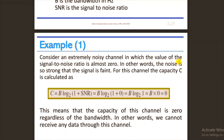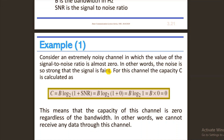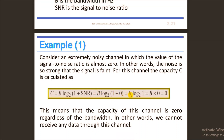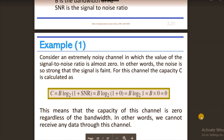Consider an extremely noisy channel where the value of SNR is almost zero — the noise is so strong that the signal is overwhelmed. If SNR is 0, the capacity C = B log₂(1 + 0) = B log₂(1) = 0 bits per second. This means if the channel is extremely noisy, the capacity is 0.